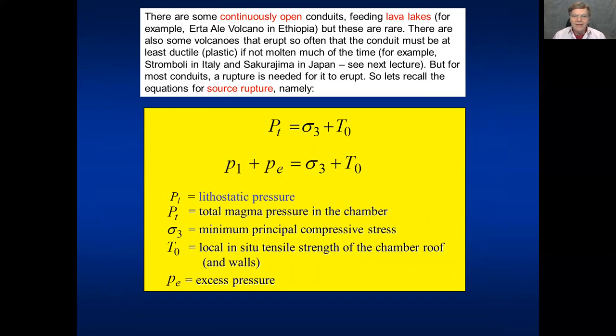Some of course are continuously open. There are some lava lakes in the world, but of course there are not very many. And then there are volcanoes that erupt more or less continuously, like Stromboli in Italy and Sakurajima in Japan. I'll come to them in the next lecture. But for most eruptions, a rupture is needed. The roof of the magma chamber or reservoir needs to rupture. And I remind you now of the condition for rupture.